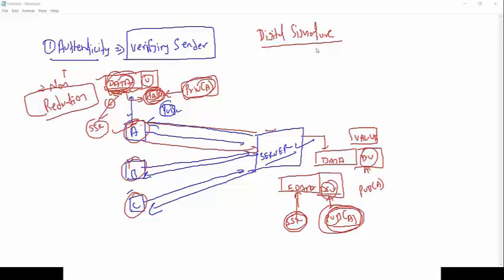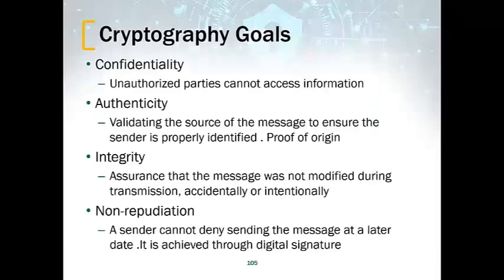Guys, this entire cryptography is based on these principles only. If you understand this, you can handle any kind of question in the exam. The four principles: first is confidentiality — where unauthorized parties cannot access the information. Second is authenticity — validating the source of the message to ensure the sender is properly identified, which is called proof of origin. Third is integrity — assurance that the message was not modified during transmission, accidentally or intentionally. Fourth is non-repudiation — where the sender cannot deny sending the message at a later date, which is achieved through data signatures.